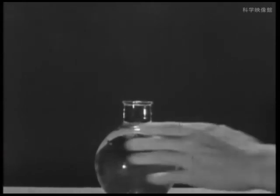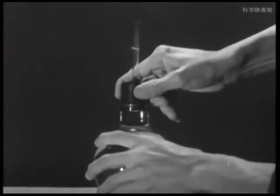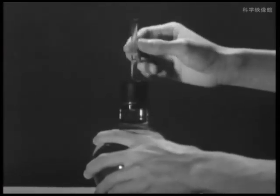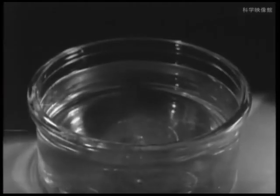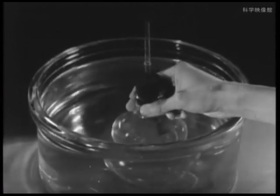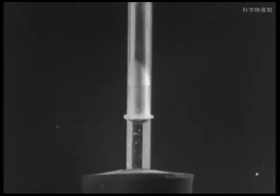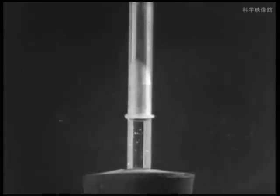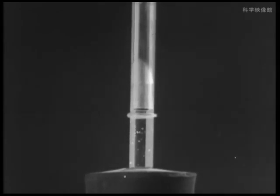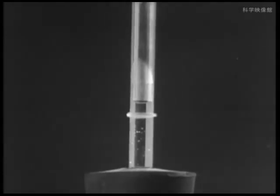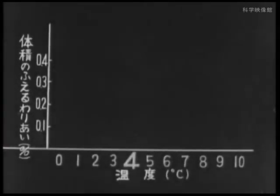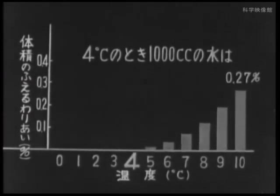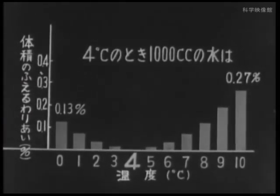Depending on the temperature, how does water change? Place a glass tube in a flask filled with water and mark it with a rubber band on the surface of the water. Place this flask in hot water and warm it up. As the temperature rises, the water's surface also rises, meaning the water increases in volume. The volume of water is smallest when it is 4 degrees, and even if the temperature becomes higher or lower than this, the volume increases.